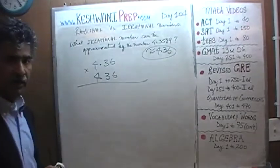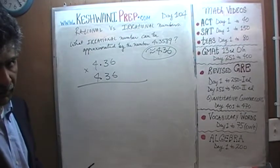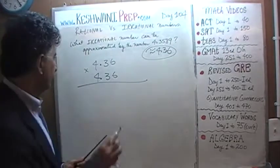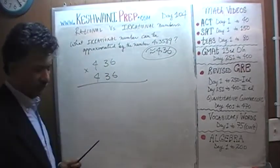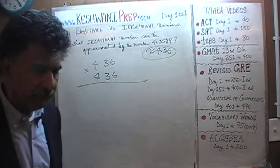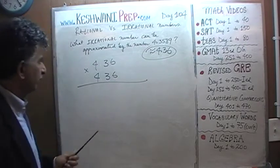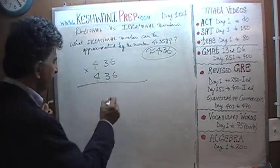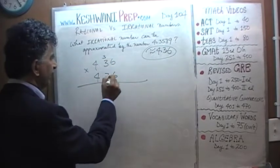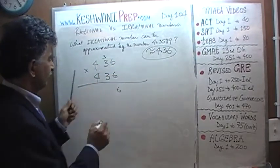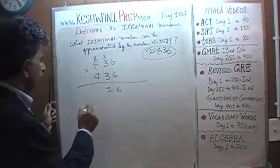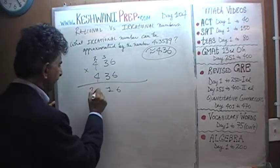The second thing we are going to do is, while we are doing our multiplication, we are going to forget the decimals for now and take care of them at the end. So let the show begin. 6 times 6 is 36 — write 6, carry 3. 6 times 3 is 18 plus 3 is 21 — write 1, carry 2. 6 times 4 is 24 plus 2 is 26. That takes care of that part.